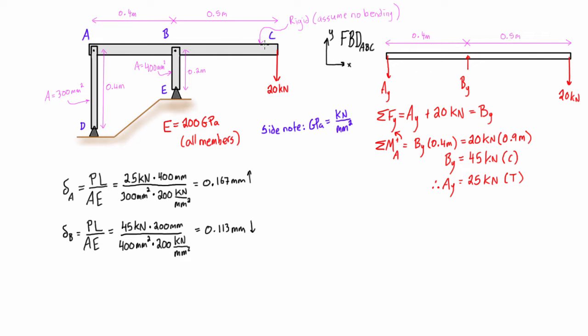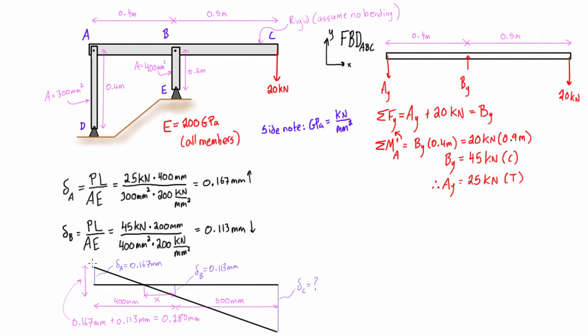Now assuming that this member ABC is rigid and it has no bending, then we can use similar triangles to solve for what the displacement at C is. So we know the displacement at A, we know the displacement at B. What we really need to do is we need to find the distance here, this X, where it crosses the axis, because then we'll use these similar triangles to solve for the displacement at C.